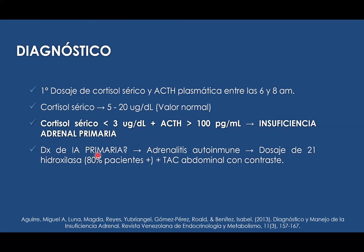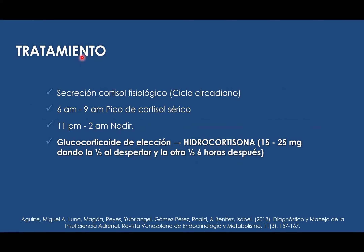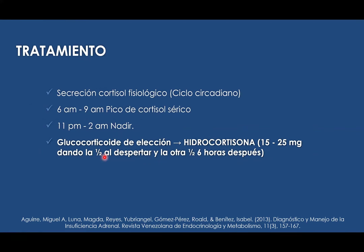Dentro de la insuficiencia adrenal primaria por adrenalitis autoinmune, dosamos el anticuerpo 21-hidroxilasa — en el 80% está positivo — más una tomografía abdominal con contraste para ver si hay una lesión a nivel de esta zona. En el tratamiento, si me falta cortisol hay que darlo. El medicamento de cabeza es la hidrocortisona; hay que adecuarla al ciclo circadiano. El esquema de hidrocortisona es de 15 a 25 miligramos, dando la mitad de la dosis al despertar y la otra mitad una hora después, para simular el ciclo circadiano.